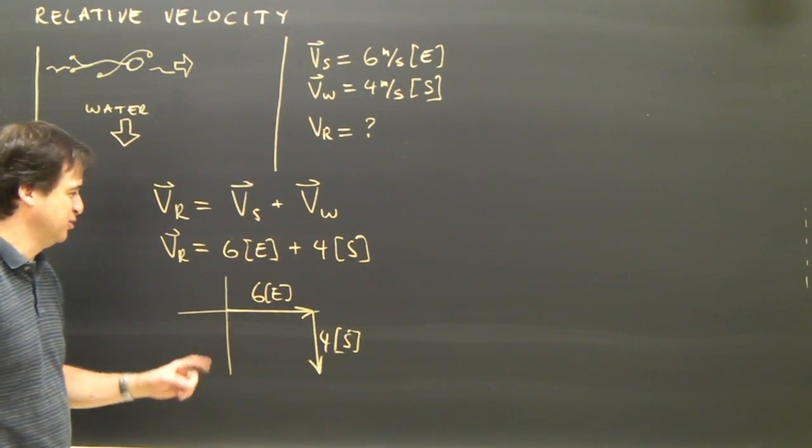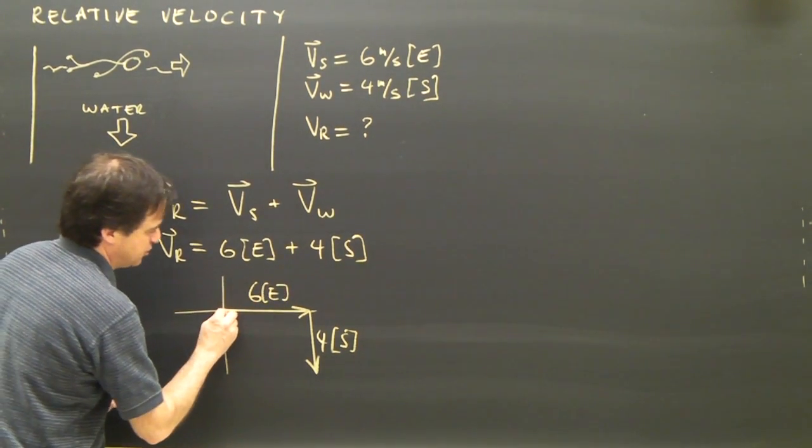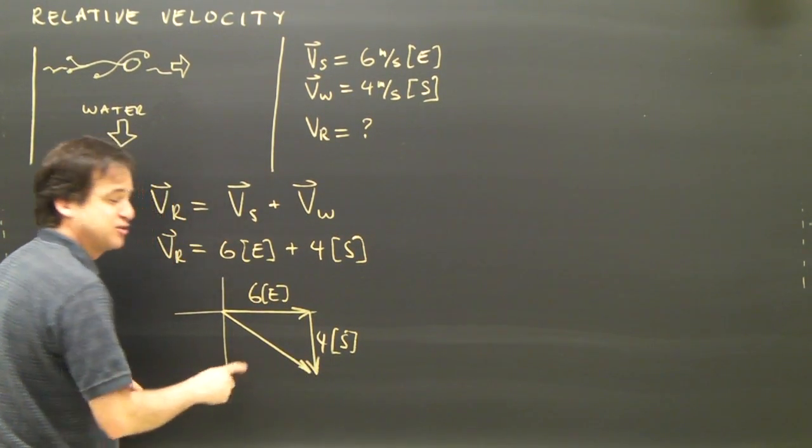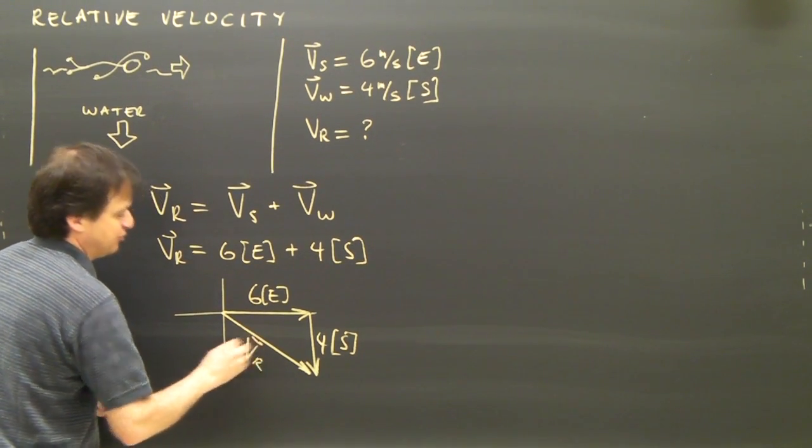I draw my x and y axis because I'm going to add them up. I've got 6 east and I've got 4 south. Remember, we added vectors in a continuous path. 6 east, 4 south. I've added those two, so start to finish. This is what we call the resultant. And in this case, it's my resultant velocity.